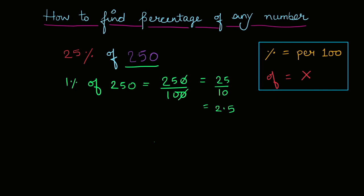So we have to find twenty-five percent. So what would we do? Simply, twenty-five ko two point five se multiply karna hai. So twenty-five percent of two hundred fifty.